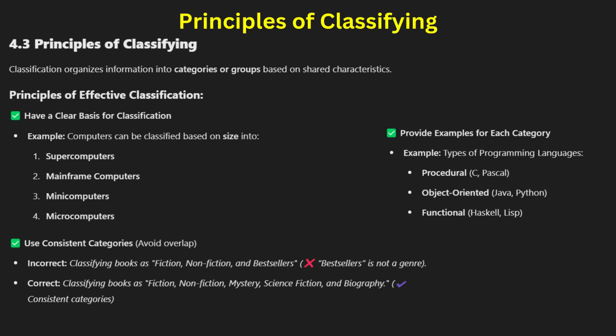Principles of classifying: classification helps in organizing ideas by grouping similar elements into categories. It is used in academic and technical writing to structure information logically. A good classification system follows three principles: a single basis for division — categorized by one clear criteria; non-overlapping categories — each element fits only one category; and completeness — covering all relevant categories.